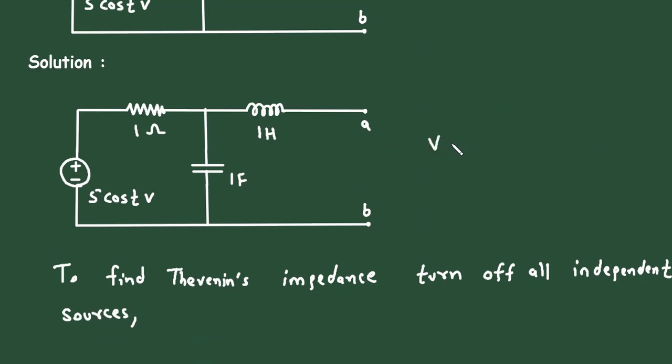So if we compare V equals V_m cos(ωt + φ). So the value of voltage V here is 5 cos t. Therefore, omega is equal to... if we compare this expression with this expression, omega is equal to 1 radian per second.